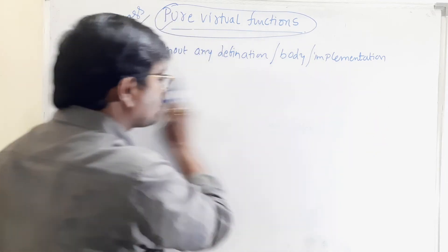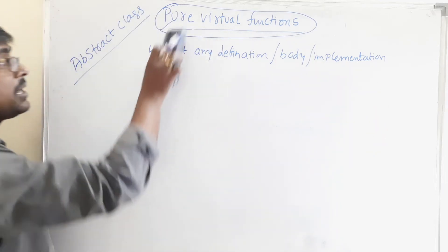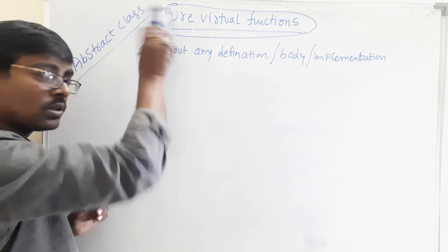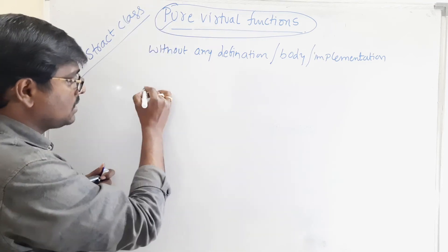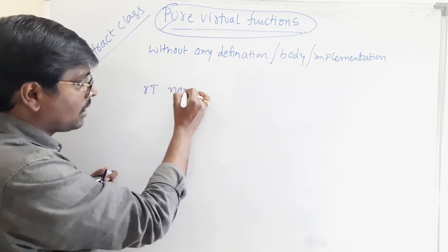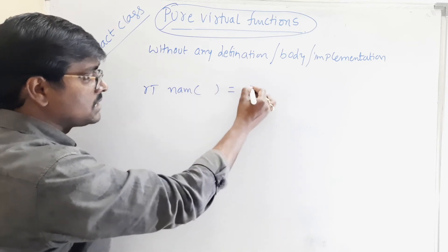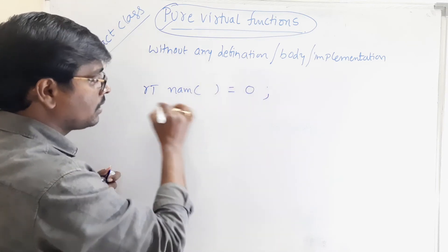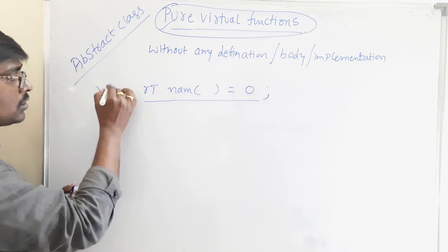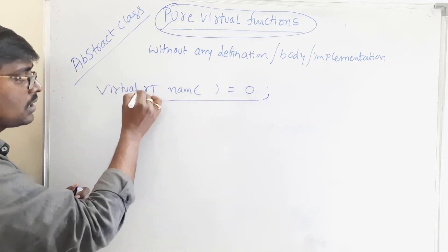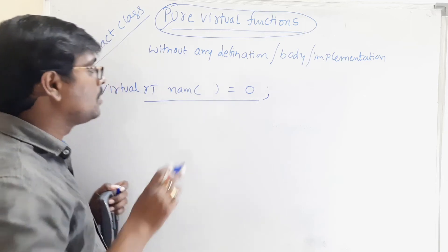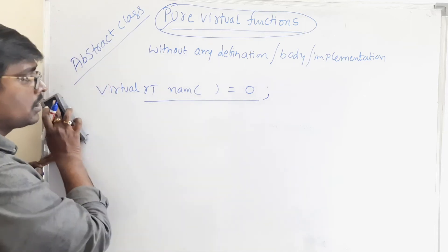What is the syntax of creating a pure virtual function? The syntax is: use the keyword virtual, then the return type of the function, then the name of the function, equals zero. So the syntax is: virtual return_type function_name() = 0. This is the syntax of a pure virtual function.